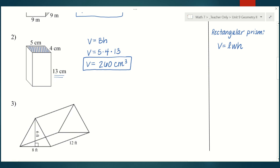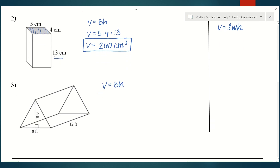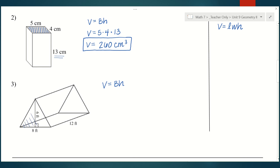Our last prism here is a triangular prism. Using the idea of finding the area of the base and multiplying it by the height: the base is your triangle, and the area of a triangle is one-half base times height. So I'd do one-half times eight (the base) times six (the height), then multiply that area times the height of the prism — which, because it's on its side, is like the length of it — times 12. That gives one-half times eight times six times 12 = 288 cubic feet.